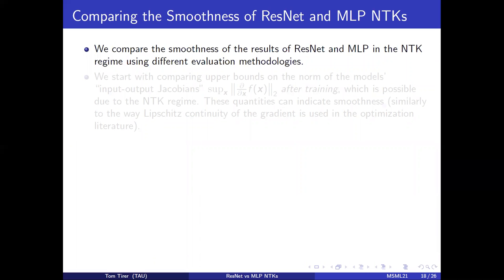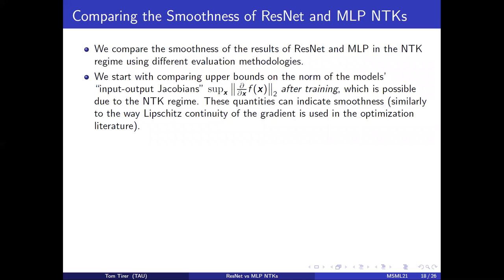So now we turn to compare the smoothness of the ResNet and MLP in the NTK regime. We start with comparing upper bounds on the norm of the input-output Jacobians, which can indicate smoothness.